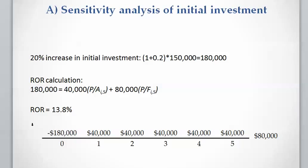The third case is a 20% increase in initial investment. The initial investment becomes 1 plus 20% multiplied by $150,000, which is $180,000. Using the equation present value of costs equals present value of income plus present value of salvage, the rate of return is calculated as 13.8%.